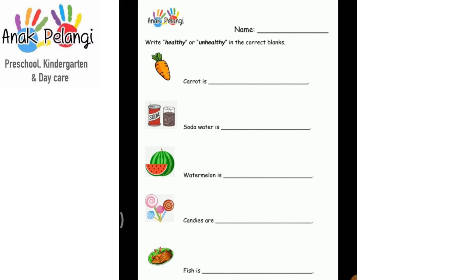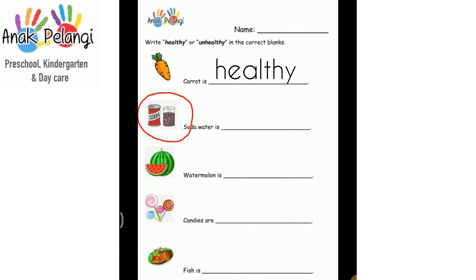This is a carrot. Carrot is healthy. Please write the word healthy. This is soda. Soda water is unhealthy. Please write the word unhealthy.